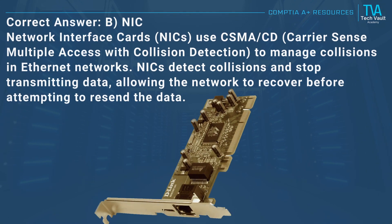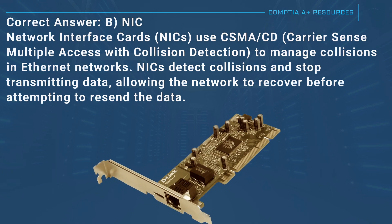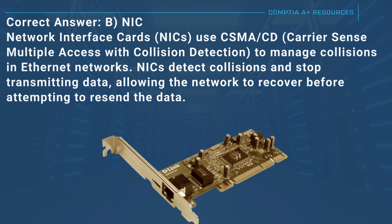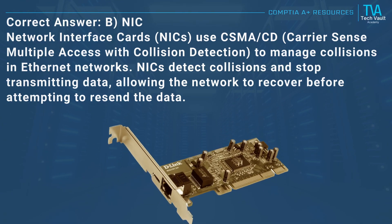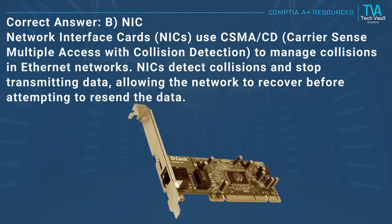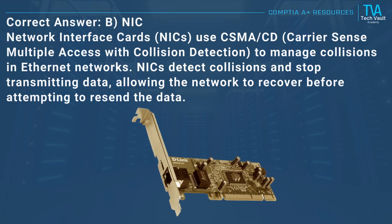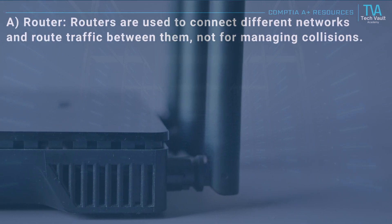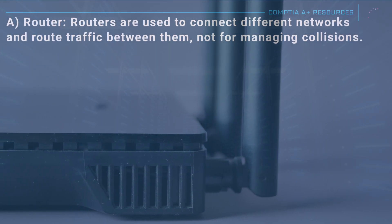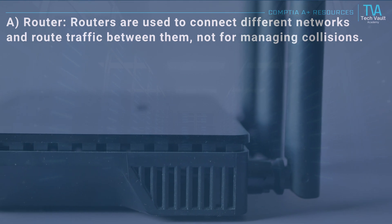Correct answer: B, NIC. Network interface cards (NICs) use CSMA/CD — carrier sense multiple access with collision detection — to manage collisions in Ethernet networks. NICs detect collisions and stop transmitting data, allowing the network to recover before attempting to resend the data. A, router: routers are used to connect different networks and route traffic between them, not for managing collisions.